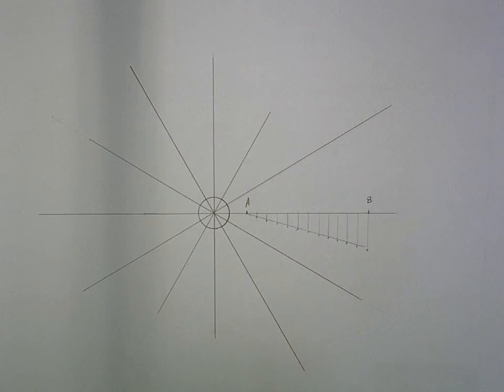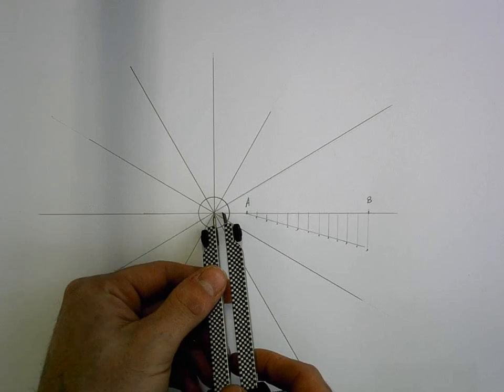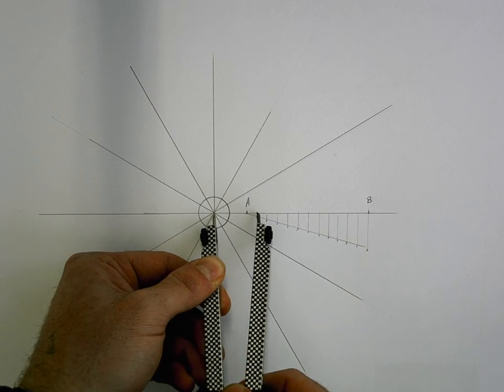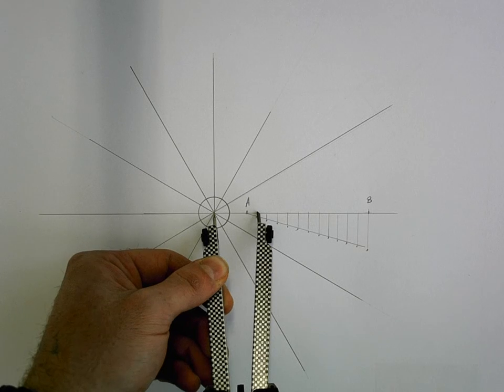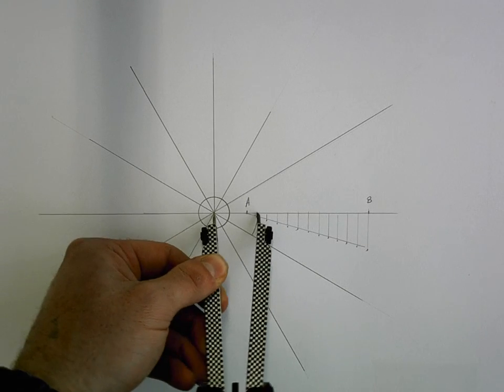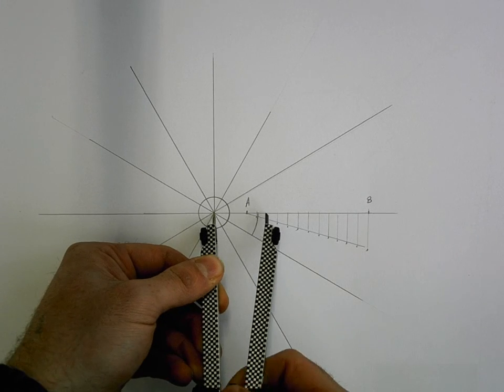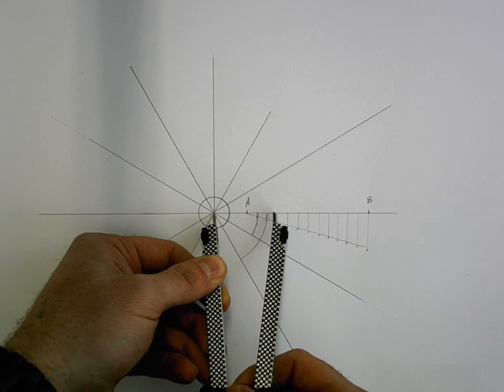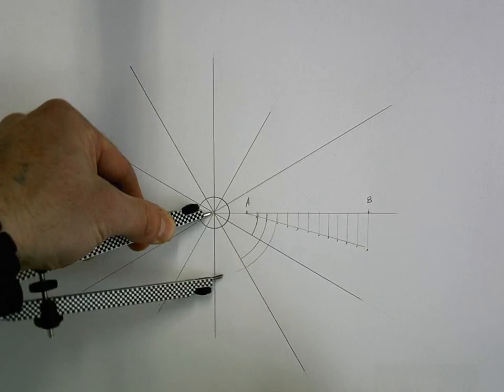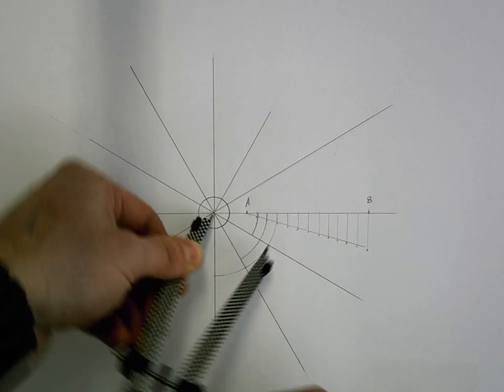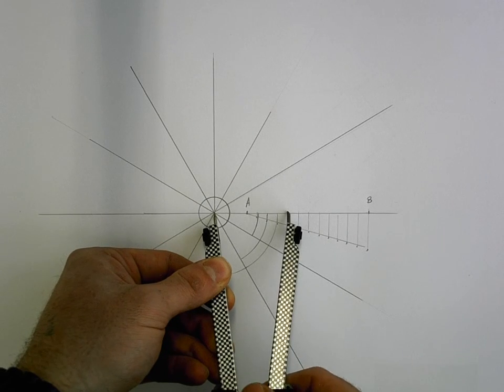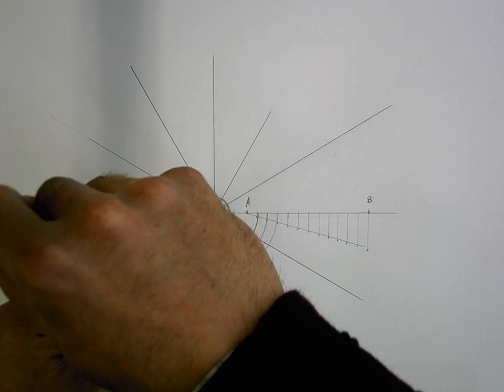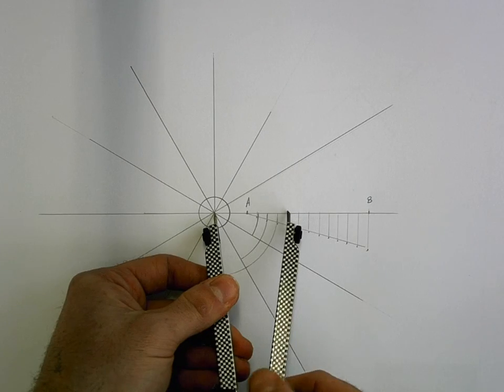So now, this is very easy, all we're going to do is put our compass on the centre point we're working from, go to the first division between A and B, and just arc that down to your first 30 degree line. Then go to the second division and arc that to your second line. Your third division, to your third line, and just keep repeating that. Now, you don't have to arc it round necessarily, you can just take the measurement and strike it off. Just make sure you keep track of where you are with them.